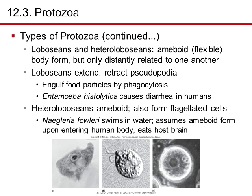Lobosians and heterolobosians are amoeboid — they're flexible and move like an amoeba, oozing along. Lobosians extend and retract pseudopodia to move and engulf food particles by phagocytosis. The amoeba Entamoeba histolytica causes diarrhea in humans. Heterolobosians also form flagellated cells. Naegleria fowleri swims in water, assumes amoeboid form upon entering the human body, and causes a severe brain infection in its host.